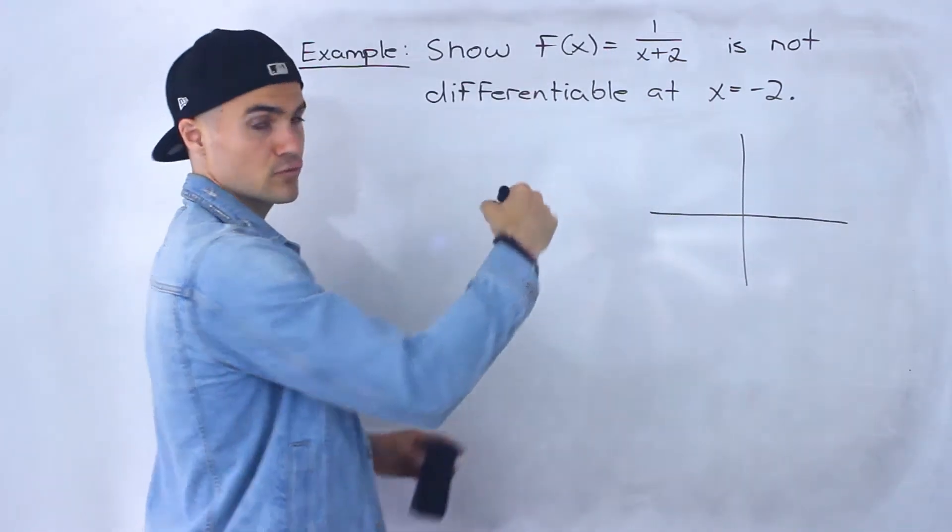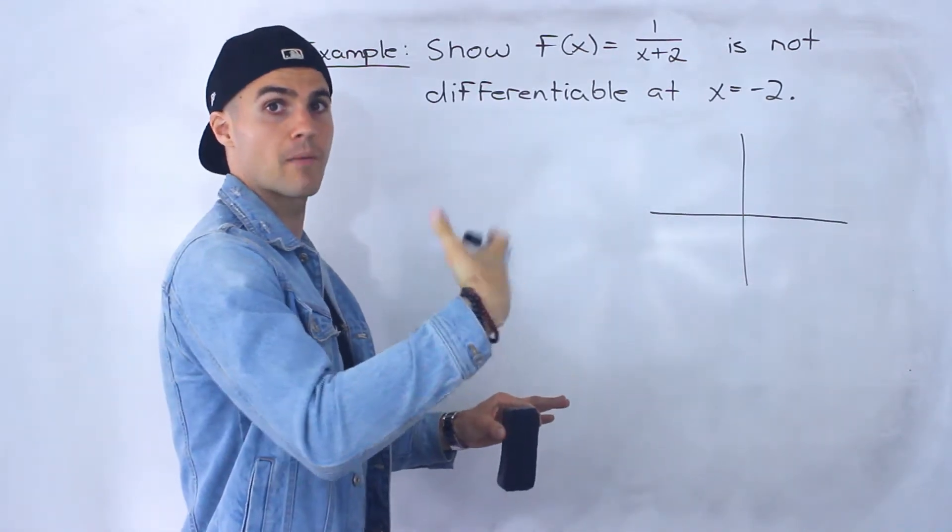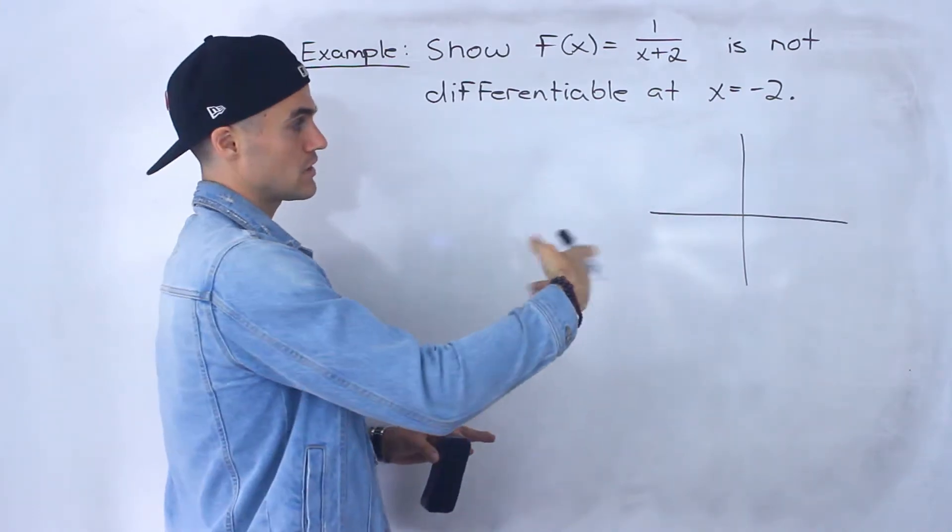And 1 over x plus 2, if we graph that, notice it's just 1 over x, the rational function, the parent rational function, shifted by 2 to the left.